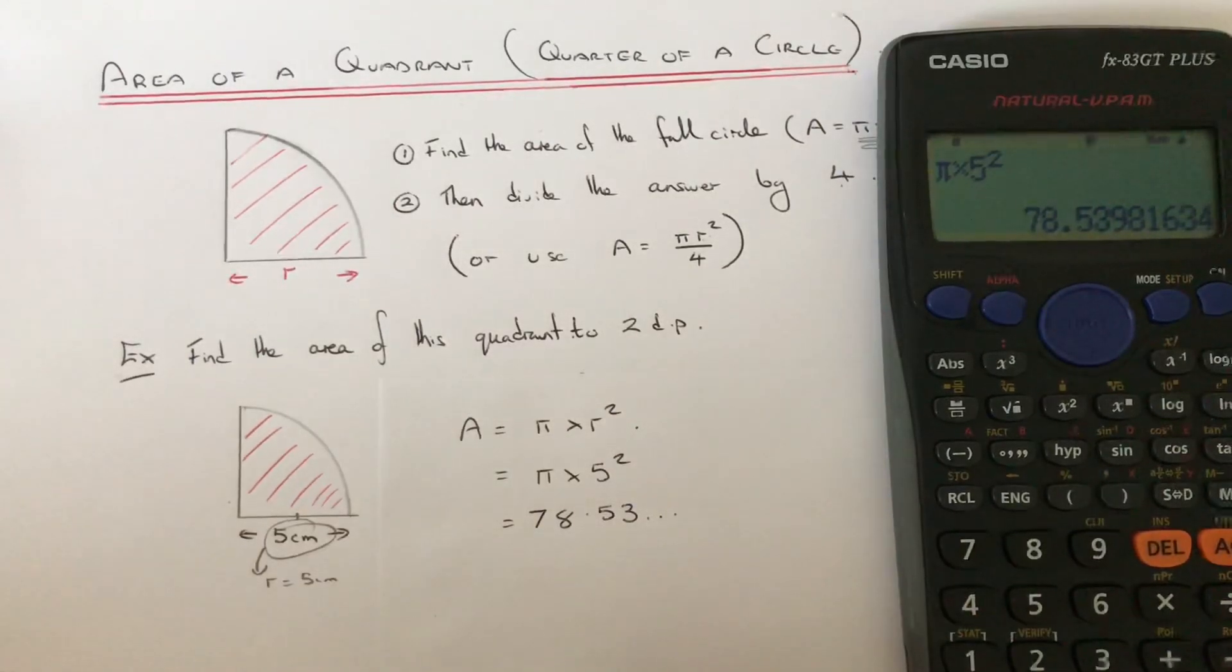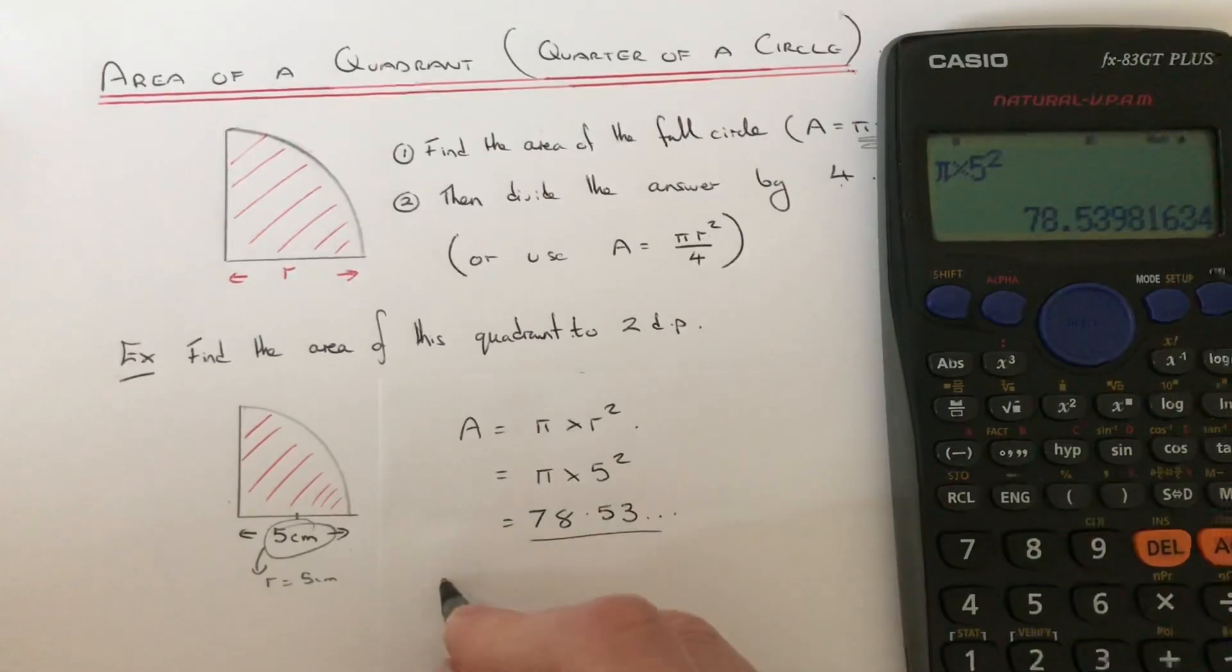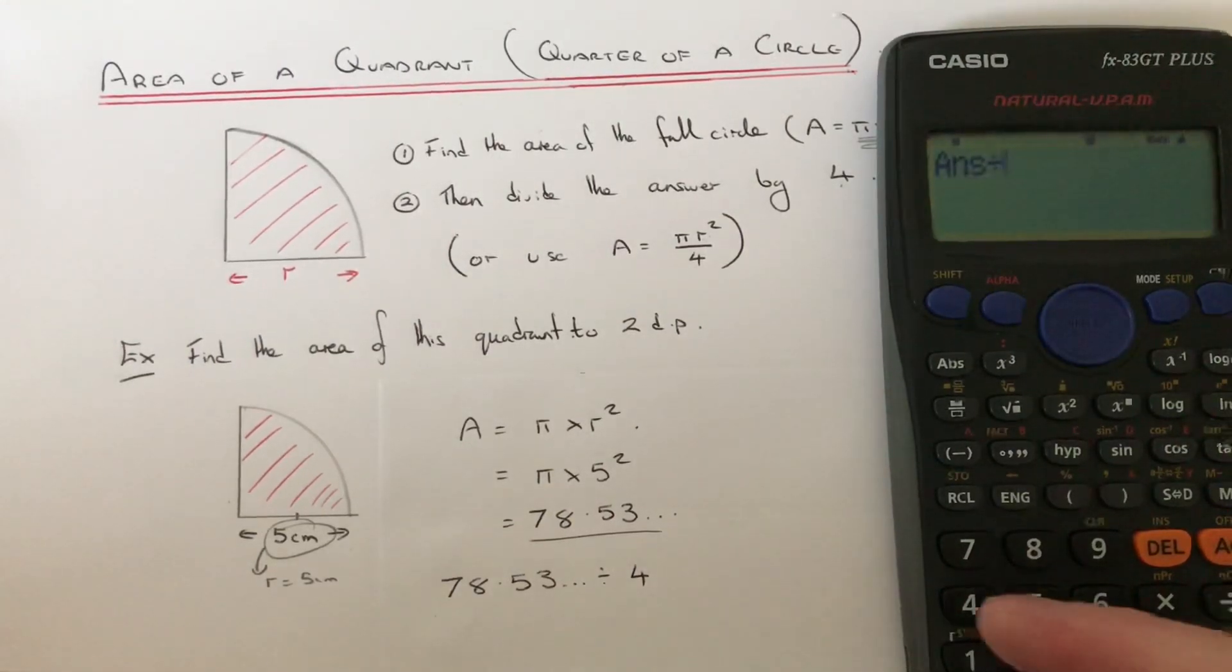So then we just need to divide this answer by 4. So we go 78.53 divided by 4. So keep that answer on your calculator. So we just need to divide it by 4.